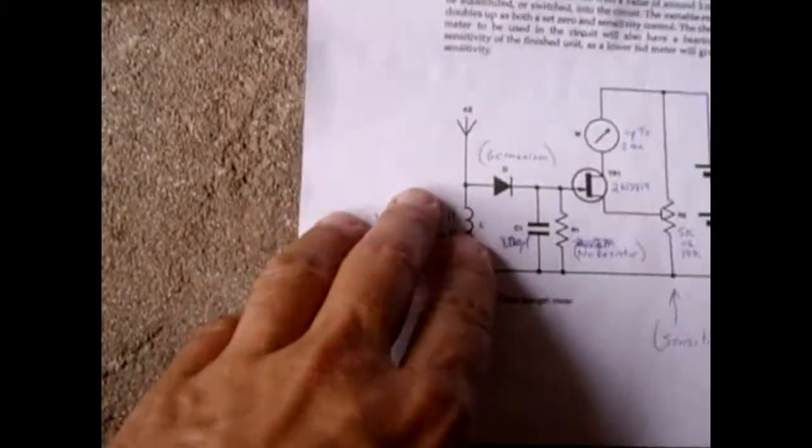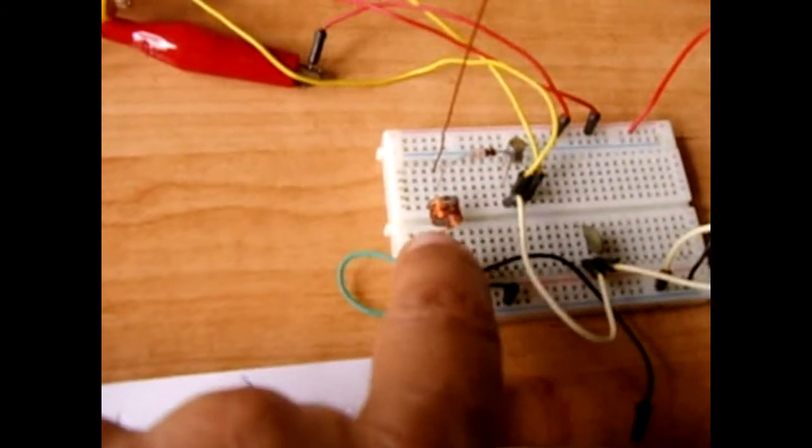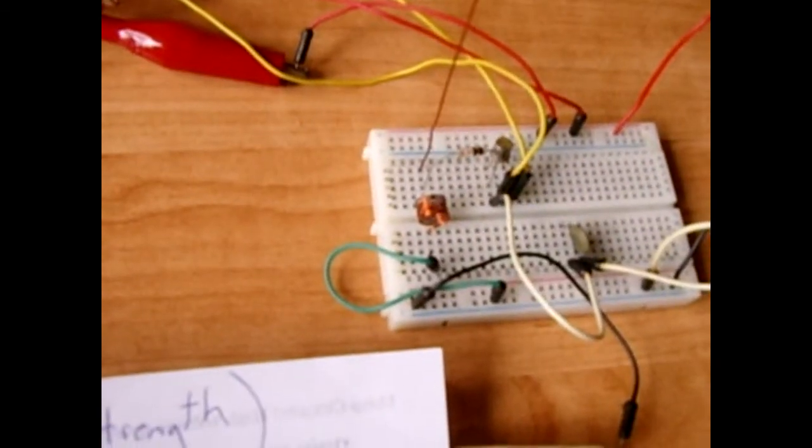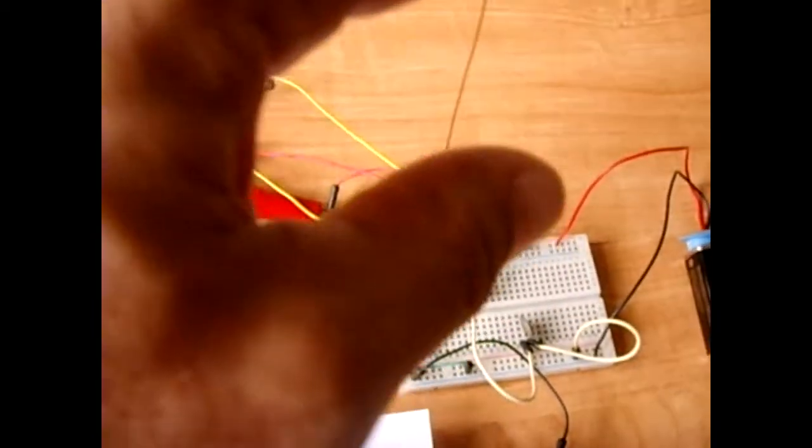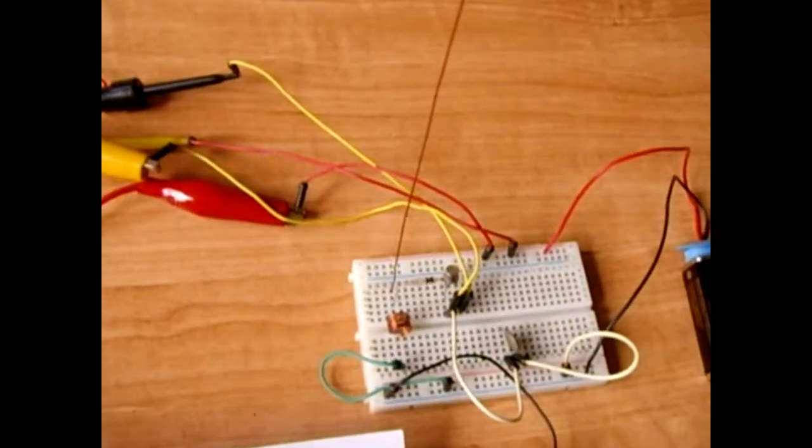So in my case I chose to use this coil instead right here, which is 6 turns wrapped around a quarter inch form of 20 gauge magnet wire. Your antenna will be a telescopic antenna of course, not just a wire like this.